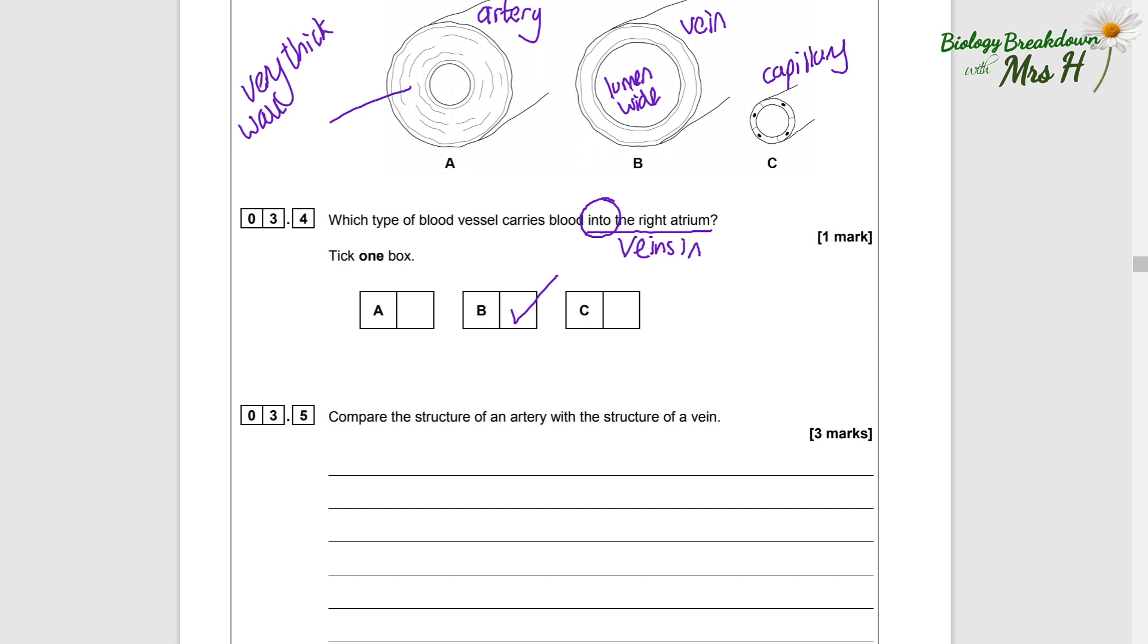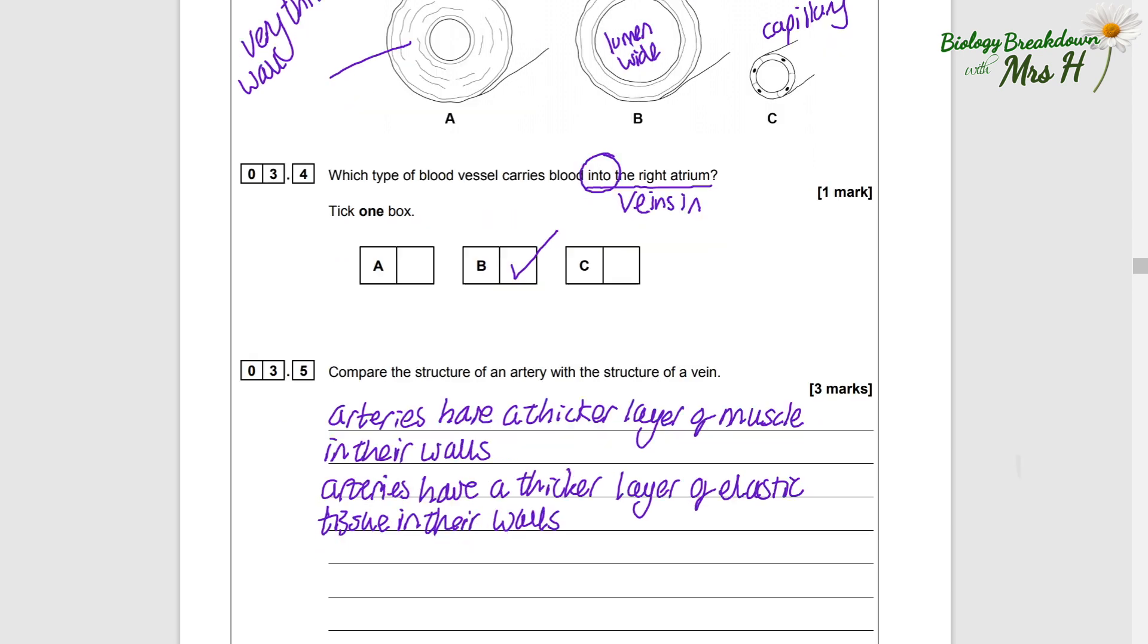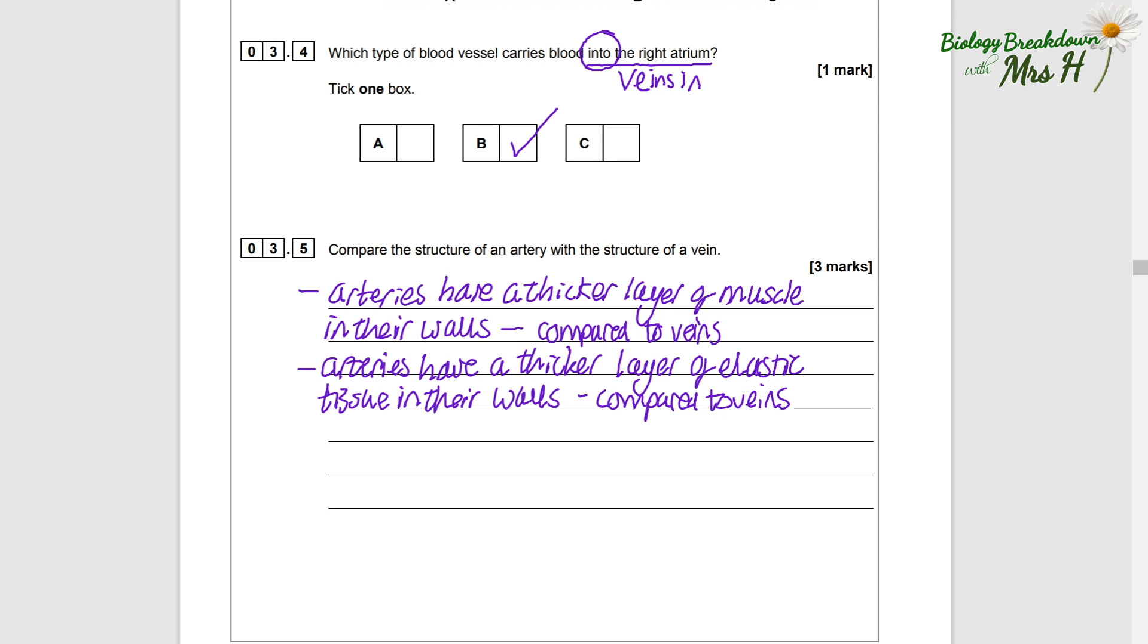3.5: Compare the structure of an artery with the structure of a vein. We already did this a little bit, so let's just write the answer down. Arteries have a thicker layer of muscle in their walls compared to veins. Arteries have a thicker layer of elastic tissue in their walls compared to a vein.